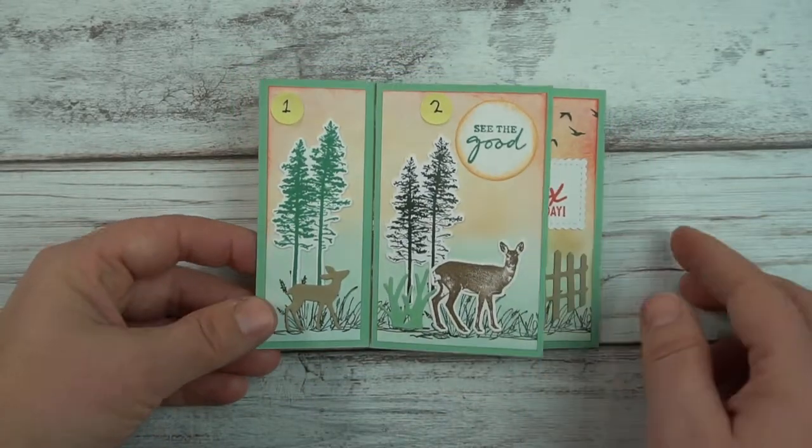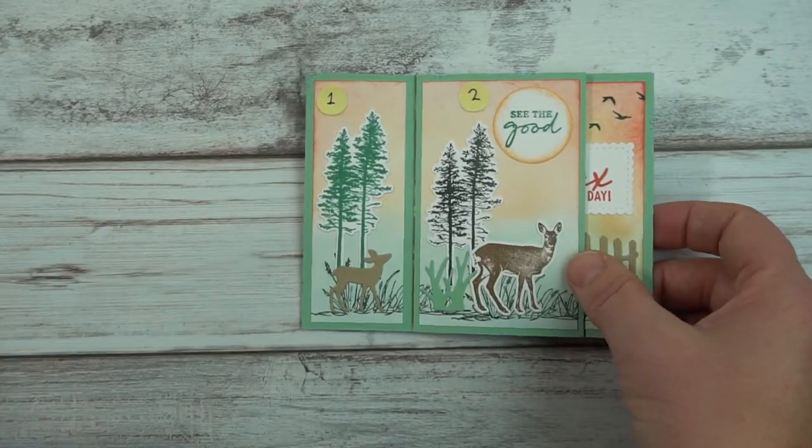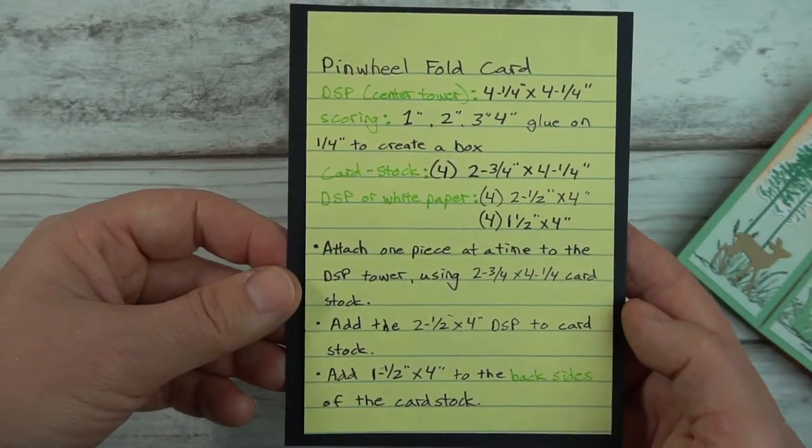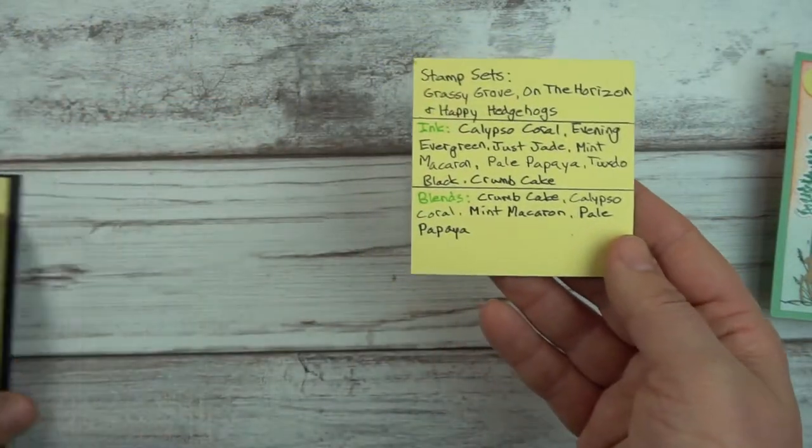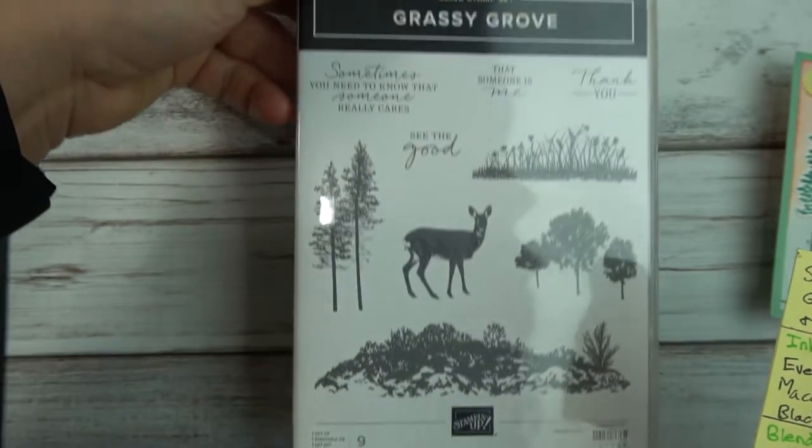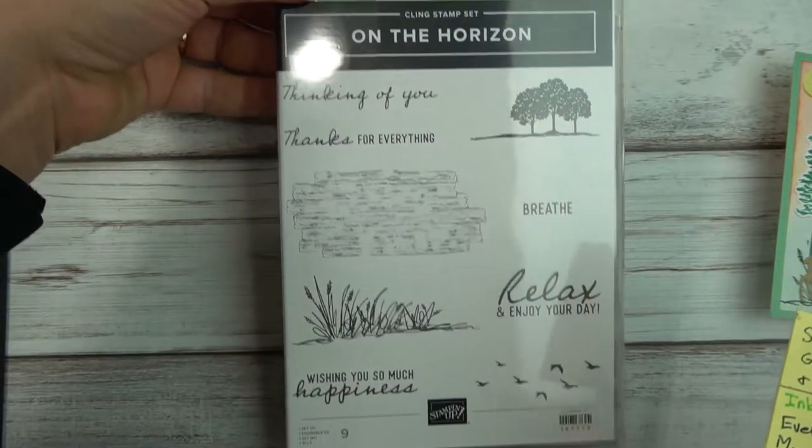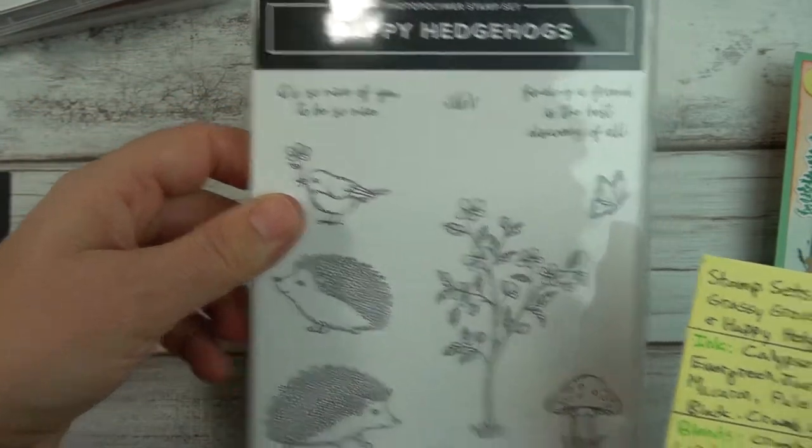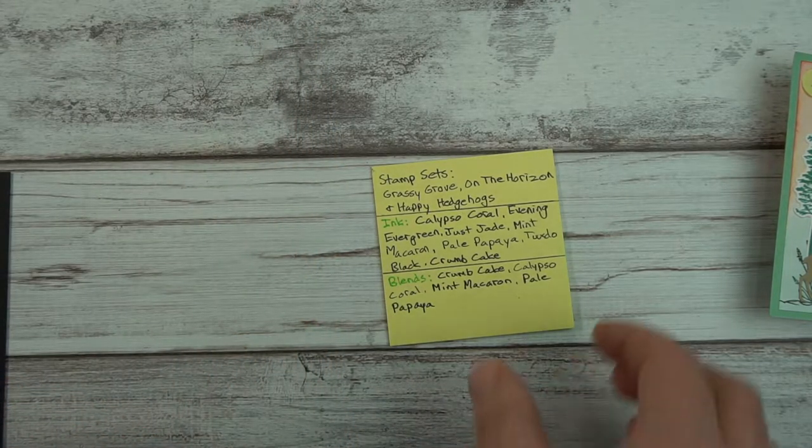So I think it's just so much fun and you can just keep playing with it. It's kind of like a fidget card, I would say. So I have written down some of my dimensions and I will try to list these in the description below. And the stamp sets I used are Grassy Grove, this is a nature set, On the Horizon, which is also kind of in nature, and last but not least, Happy Hedgehogs. So I will get started by showing how to do this fold.